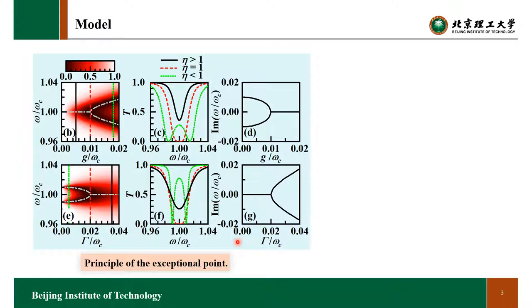This can be seen in the figure. The PT transition is determined by the ratio of the effective gain and loss over two times the backscattering strength, i.e., gamma over 2G.